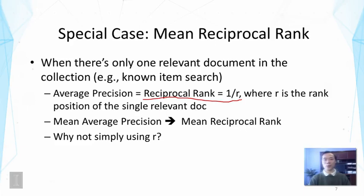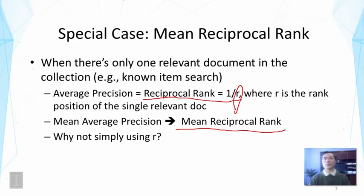If that document is ranked at the very top, r is 1, and the reciprocal rank is 1. If it's ranked second, then it's 1 over 2, etc. We can also take the average of the reciprocal rank over a set of topics, which gives us mean reciprocal rank — a very popular metric for known item search or any ranking problem with just one relevant item. Here, r is meaningful: it indicates how much effort a user has to make to find that relevant document.